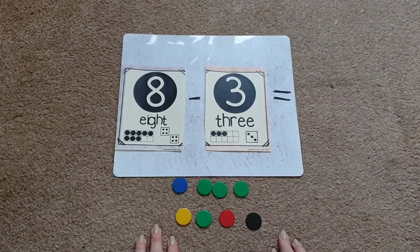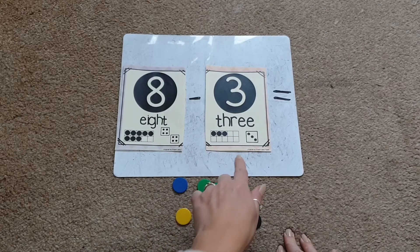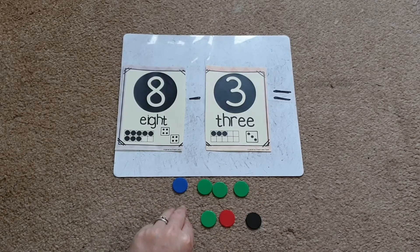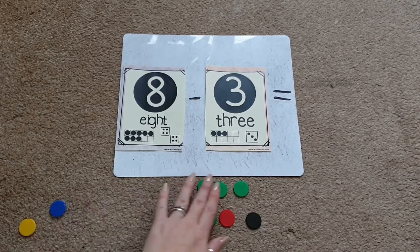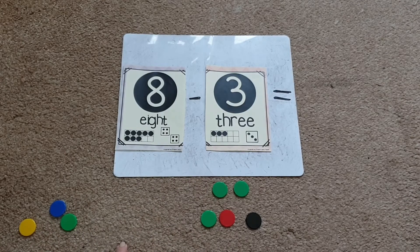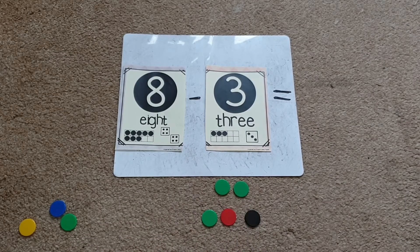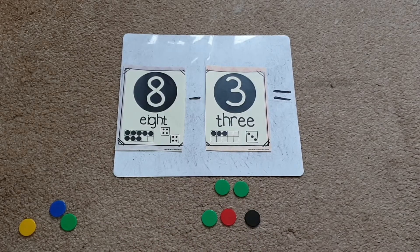And then we're going to take away 3. So we'll physically take away 3. 1, 2, 3. And then we'll ask the children to count how many they've got left. 1, 2, 3, 4, 5. So then we know that that's our answer, that we have 5 left.